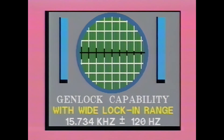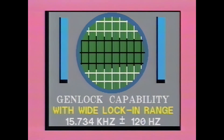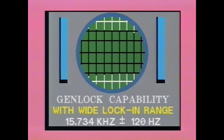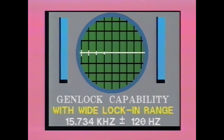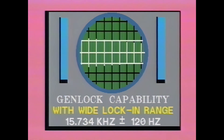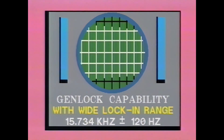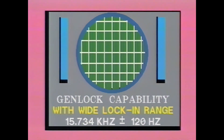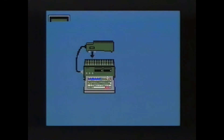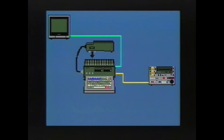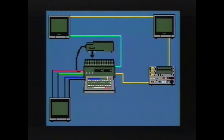The SMC-70G has a wide lock-in range, enabling it to gen-lock to VTRs and video disc players without the added expense of a time-based corrector. The SMC-70G package has two superimposer options: the NTSC superimposer and the RGB superimposer.